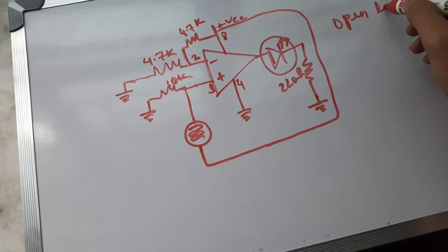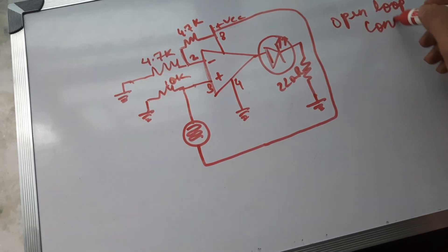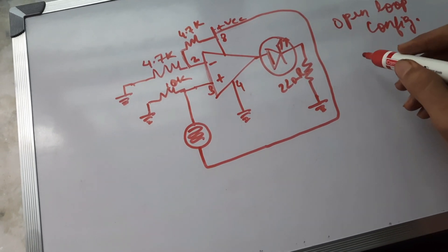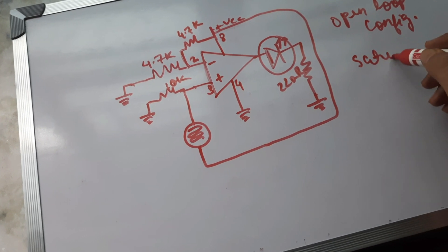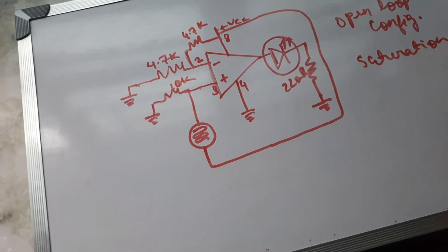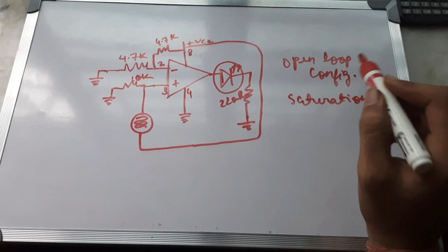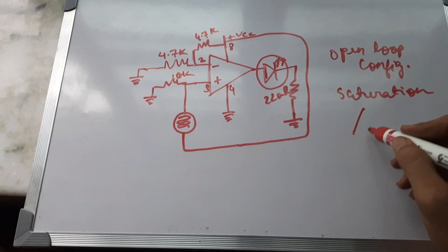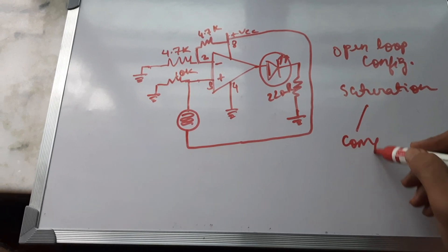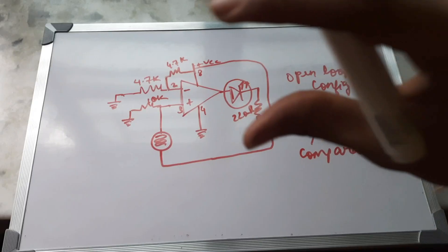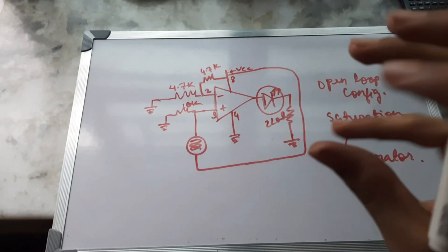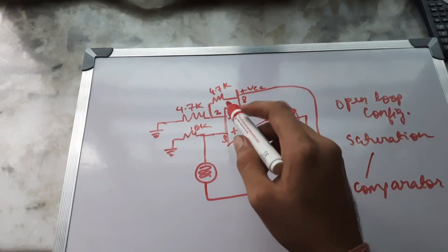So what have I done here? This op-amp is working in the open loop configuration, which means it is working in saturation region. Because whenever there is a positive feedback or there is an open loop configuration, the op-amp always works in the saturation region in which it works like a comparator. Here it is working like a comparator, it's kind of comparing the two voltages given to it.